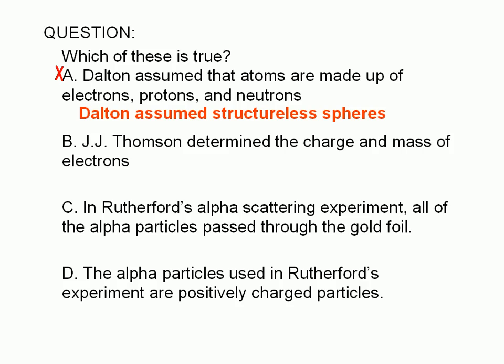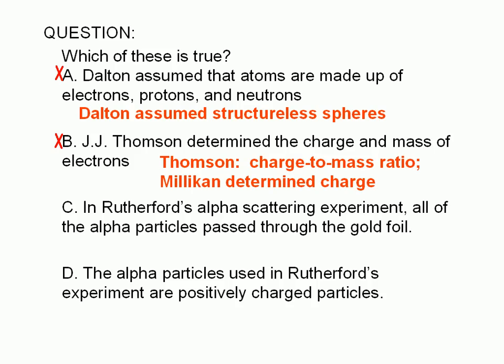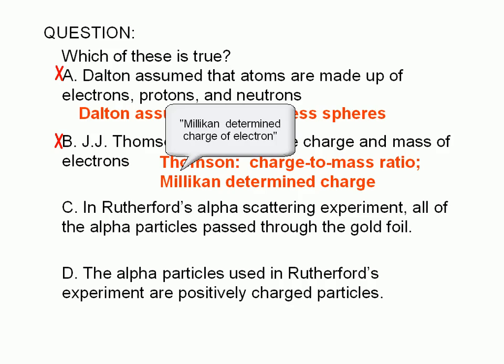Choice B is also false. J.J. Thompson's experiment determined the charge-to-mass ratio. Because the particles ejected from the cathode didn't depend on the material used for the cathode, it was concluded that whatever particles were ejected must be present in all atoms. The deflection of cathode rays by electric and magnetic fields suggested the particles were negatively charged. The charge-to-mass ratio of the electron was actually determined in Millikan's oil-drop experiment.